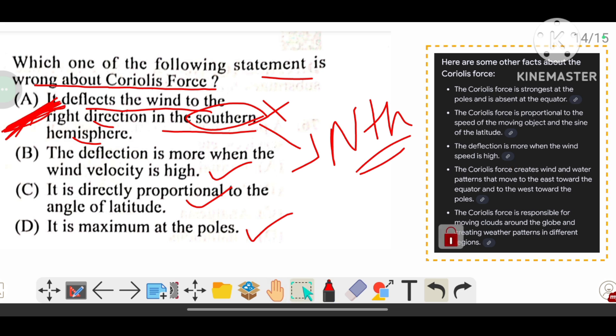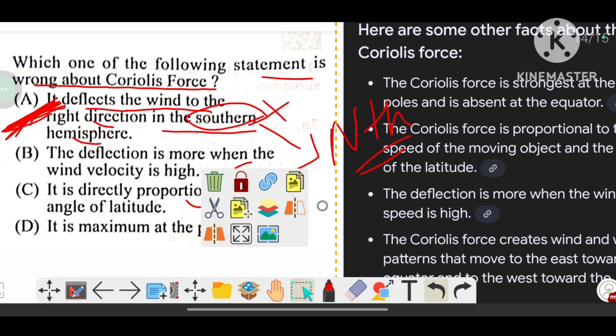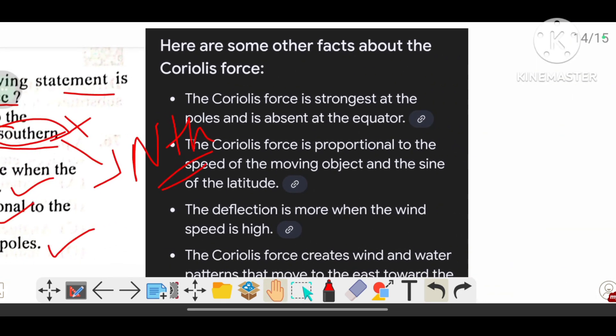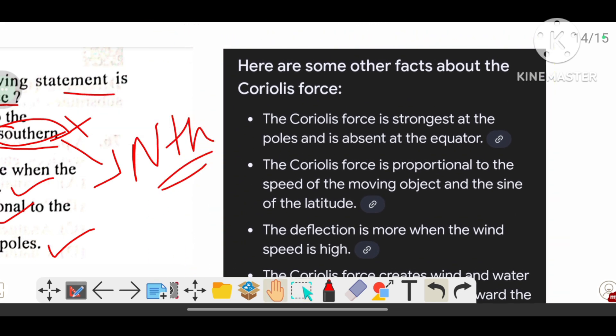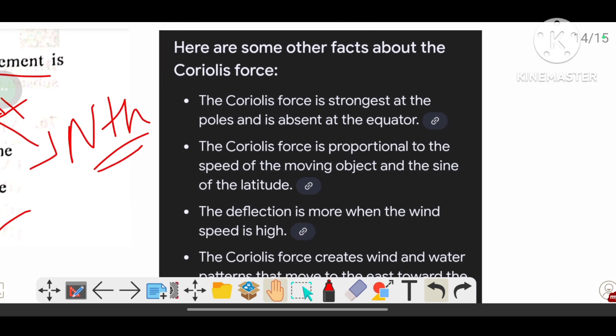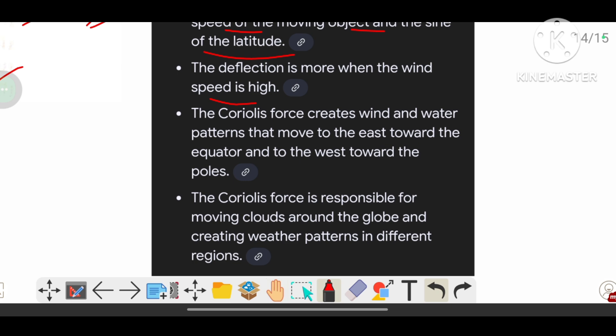These are the important facts about the Coriolis force. It is strongest at the poles and absent at the equator, proportional to the speed of the moving object and the sine of latitude. The deflection is more when the speed is high.